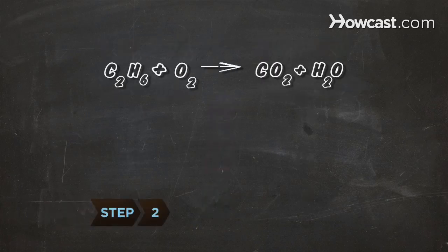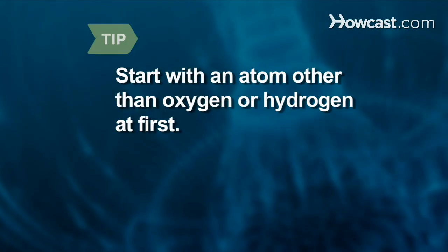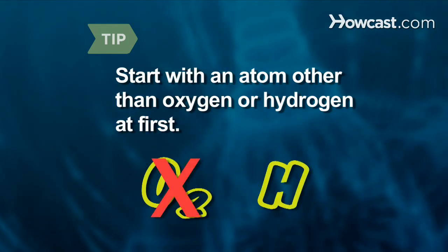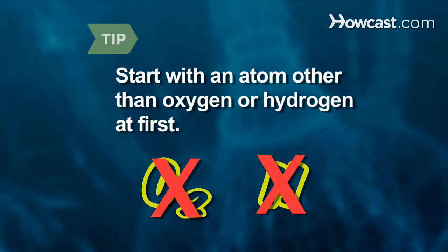Step 2: Find an element that is in only one compound on the left side and in only one on the right side of the equation. Start with an atom other than oxygen or hydrogen. Oxygen and hydrogen atoms are usually in more than one compound on either side of the equation, so they are best left to last.